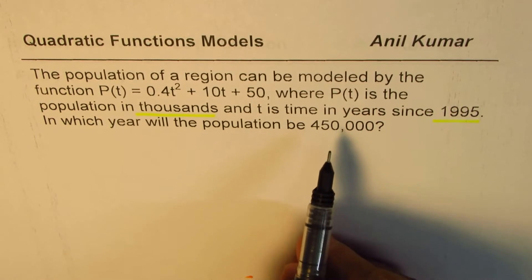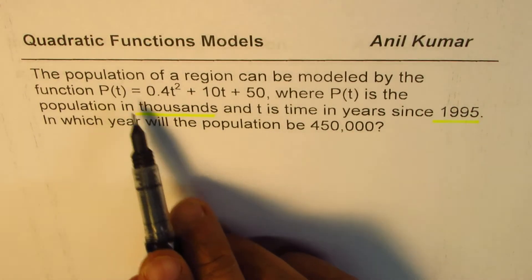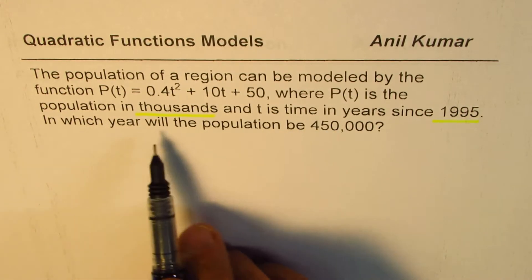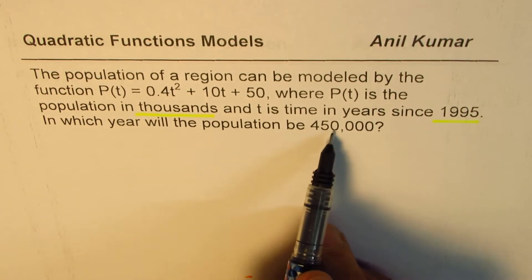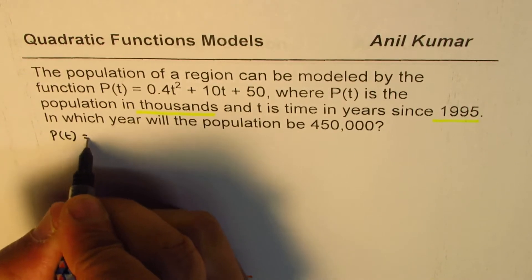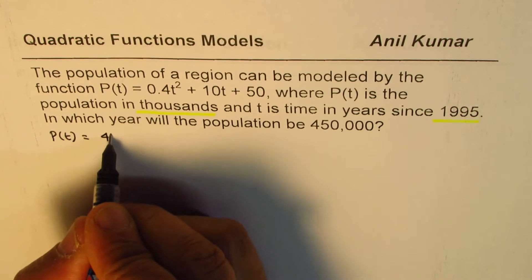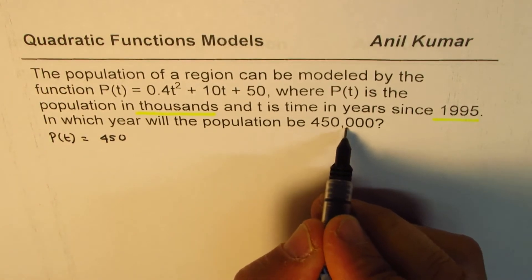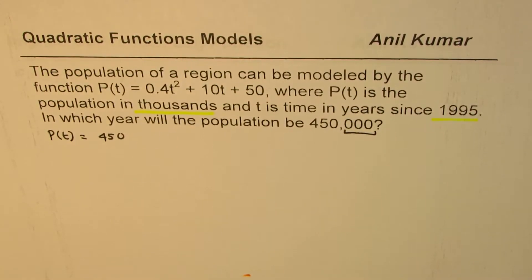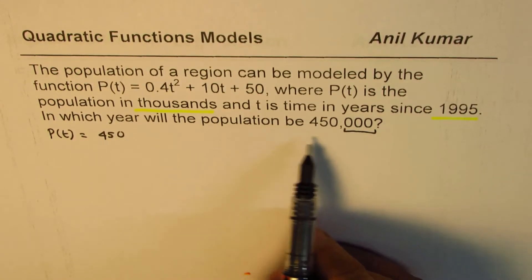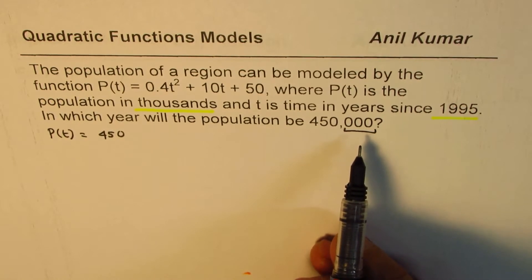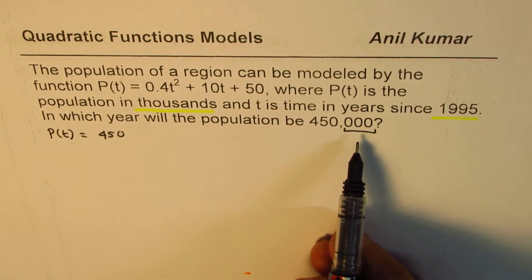Well, the key here is that population P(t) is given in thousands. You need to find the year in which the population will be 450,000. That means P(t) should equal how much? 450. Don't write thousand. Do you see that? Since P(t) is in thousands, that is key. Now many times students will use the value 450,000 and land up into a wrong answer. That could be a difficulty.